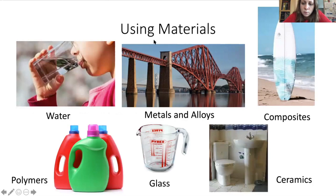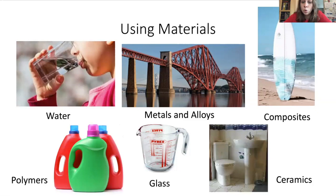Here are all the different materials we've looked at in this area of the using resources topic: water, metals and alloys, composites, polymers, glass and ceramics. The expectation is that you are aware of all these different materials, have an idea of what they're formed of and what their properties are. Quite often exam questions in this area are really application-based, so you might get a material you've never heard of and you'll be thinking about how it's like glass or how it's like metal, trying to link your understanding of properties. It's also quite often application in terms of: here's some data about different materials, what can you conclude from this data?